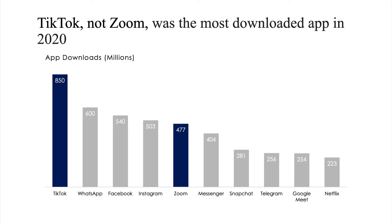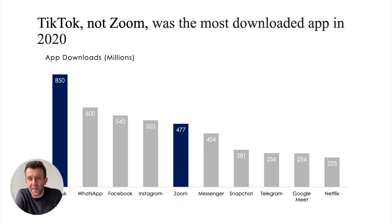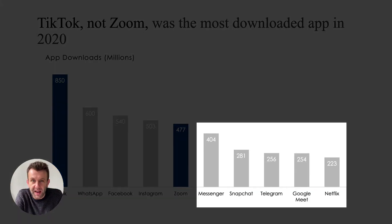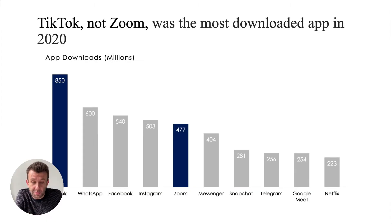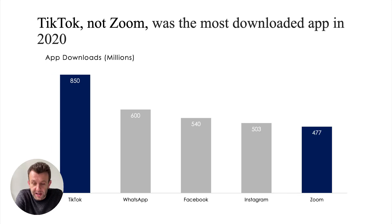Straight away we can see that TikTok, not Zoom, was the most downloaded app in 2020. However, if you want to go data viz master and really think about what story you're trying to communicate, you can also question whether we need those bottom five apps. If the story is only to communicate that TikTok, not Zoom, was the most popular app in 2020, and there were a few in between — let's get rid of those data points, they're not contributing to the story.